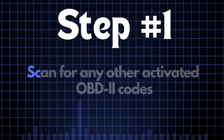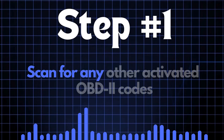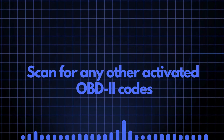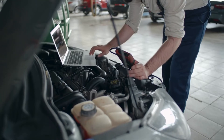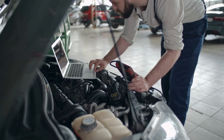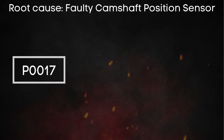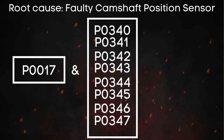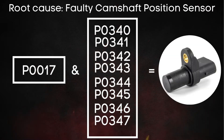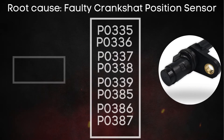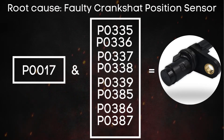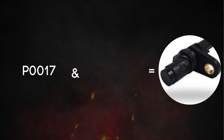The first step is to scan for any other activated OBD2 codes. This helps us pinpoint where we need to focus. If there are other codes related to a faulty camshaft sensor, we should focus on the camshaft sensor. Similarly, if there are codes related to the crankshaft sensor, that's where our attention should go.